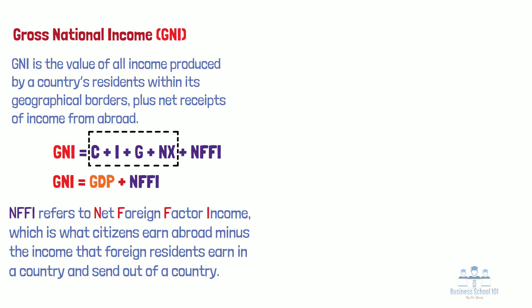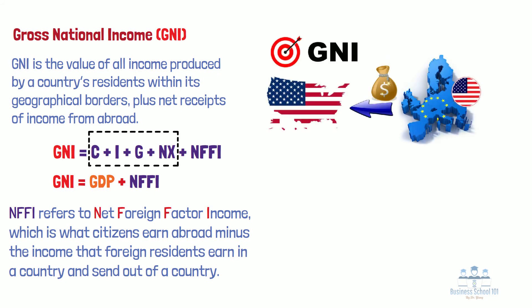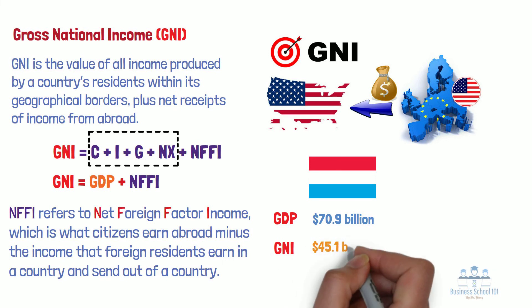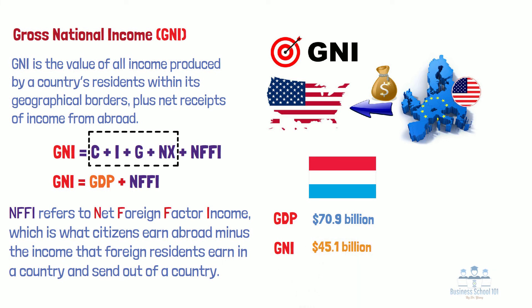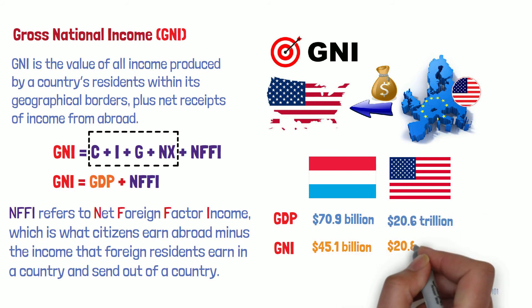In an increasingly global economy, GNI has been put forward as a potentially better metric for overall economic health than GDP. Because certain countries have most of their income withdrawn abroad by foreign corporations and individuals, their GDP figures are much higher than the figures that represent their GNI. For example, in 2018, Luxembourg's GDP was 70.9 billion dollars, while its GNI was 45.1 billion dollars. This discrepancy was due to large payments made to the rest of the world via foreign corporations attracted by Luxembourg's favorable tax laws. Contrarily, GNI and GDP don't differ substantially in the US — in 2018, the US GDP was 20.6 trillion dollars, while its GNI was 20.8 trillion dollars.